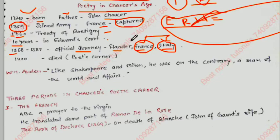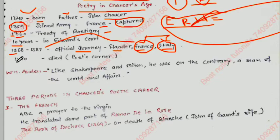The influence of Chaucer is the same influence we count on English literature. So it is important to note where he went — France and Italy — what he learned there. In 1400 he died, and he was buried in the Poet's Corner.